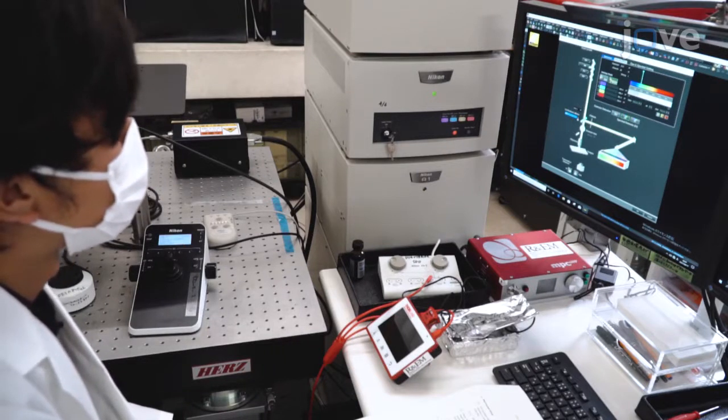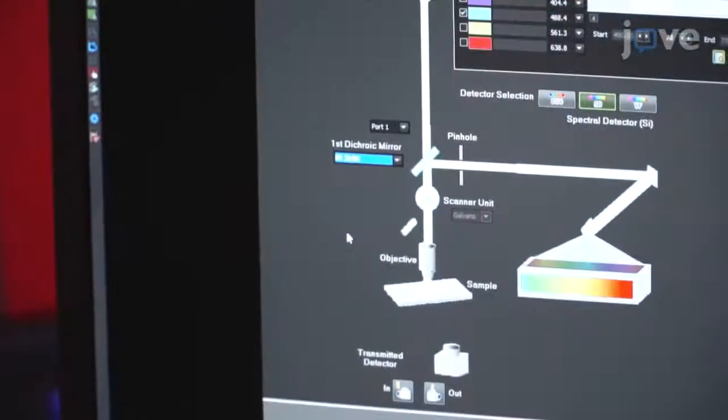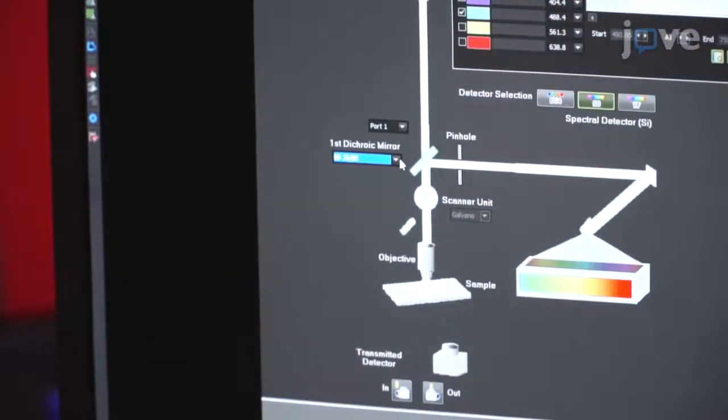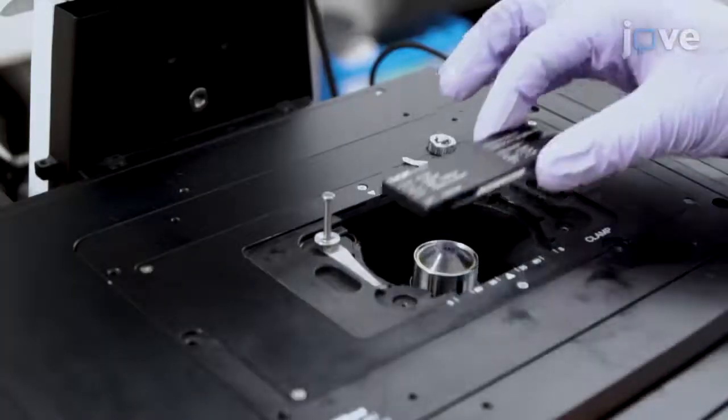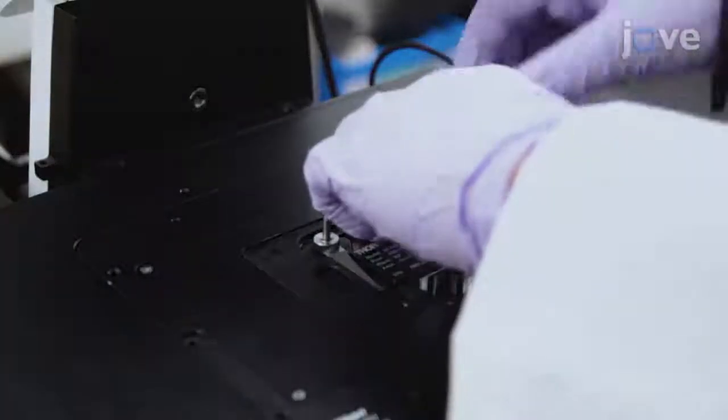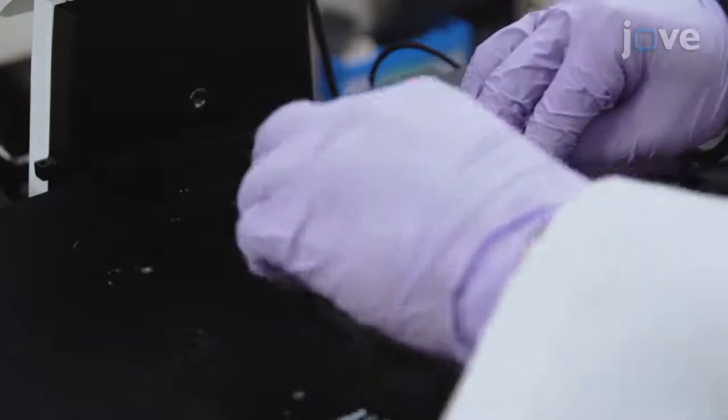For multichannel confocal spectroscopy, equip the microscope with dichroic mirrors and use a laser power meter to adjust the illumination intensity for each excitation wavelength.